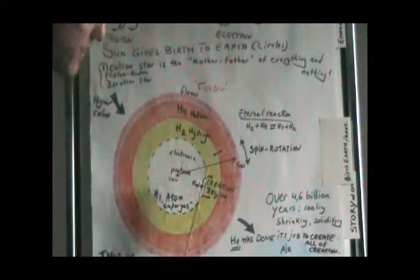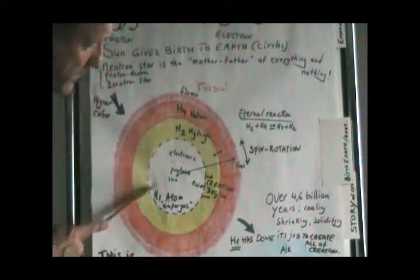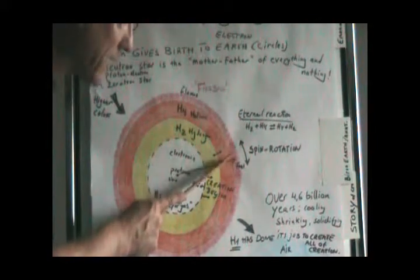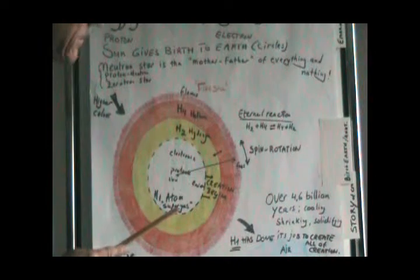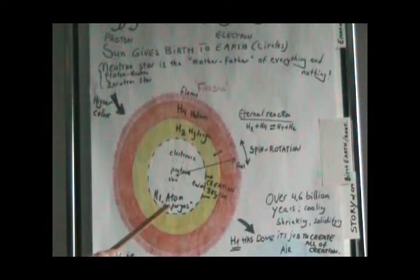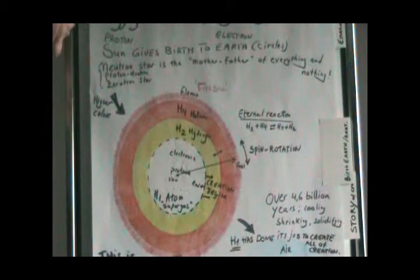Everything becomes the same. Creation begins right at this black line. H2 gas, helium gas, perpetual reaction to create the sun forever and ever, although the sun does have a limit.